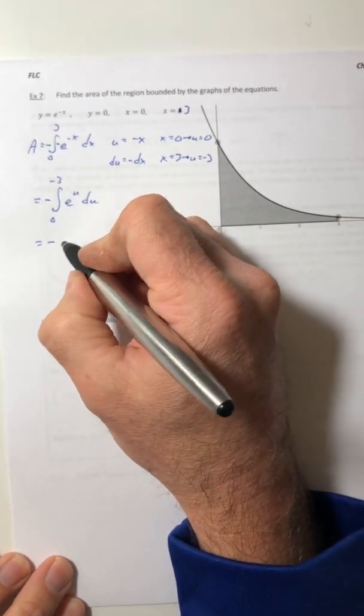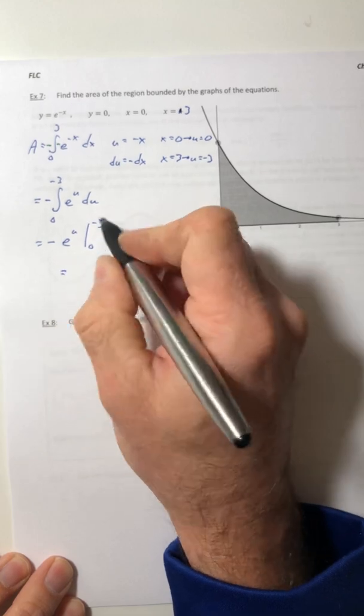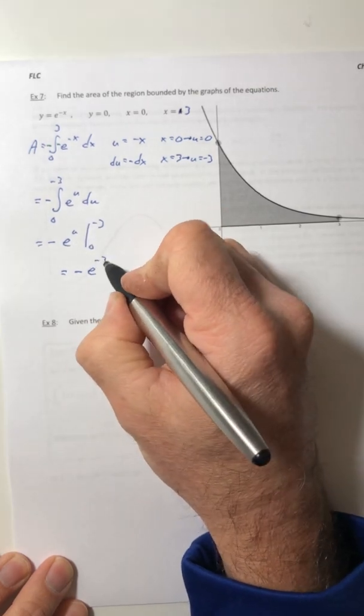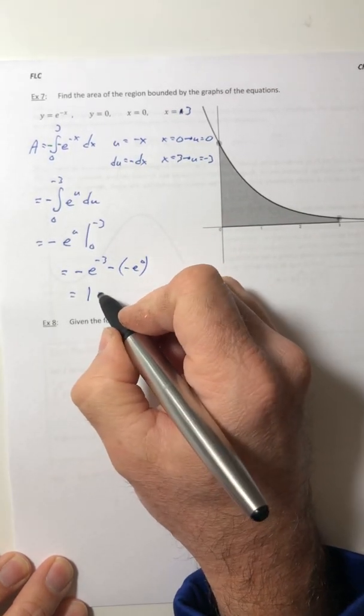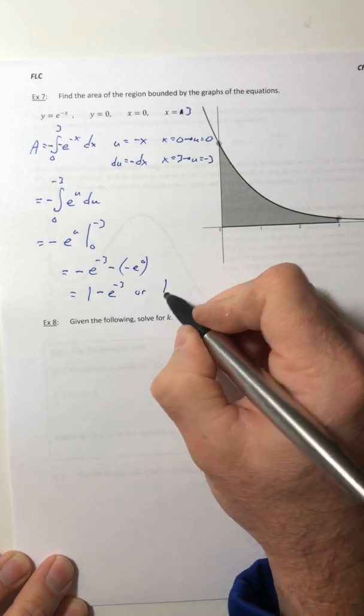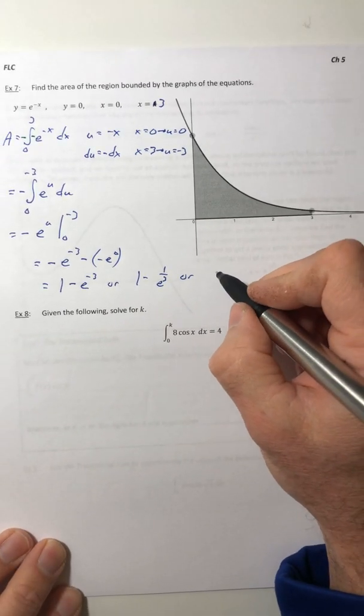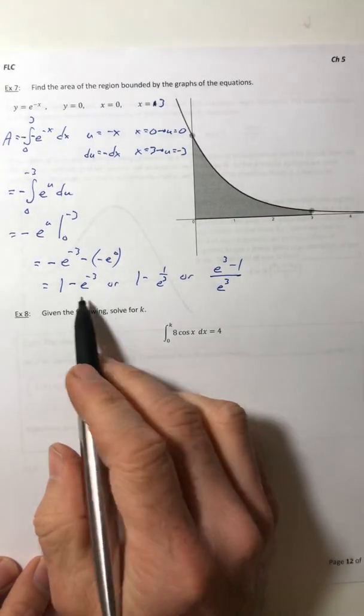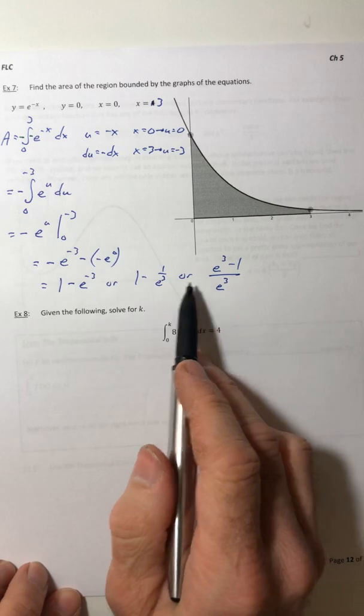So I can change the integrand into e to the u and then du. Integrate negative e to the u, and we're going from 0 to negative 3. So plug in the bounds. So negative e to the negative 3rd minus the negative e to the 0. So 1 minus e to the negative 3rd, or you can flip it down on the bottom, or get a common denominator if you want that. So any of those three answers would totally work. Just be aware that if it's a multiple choice question, it could have any of these three as a solution.